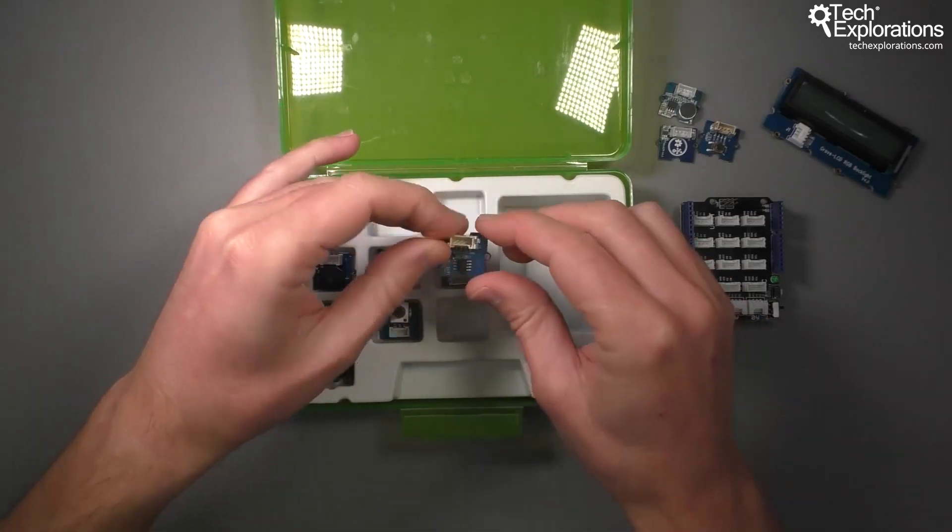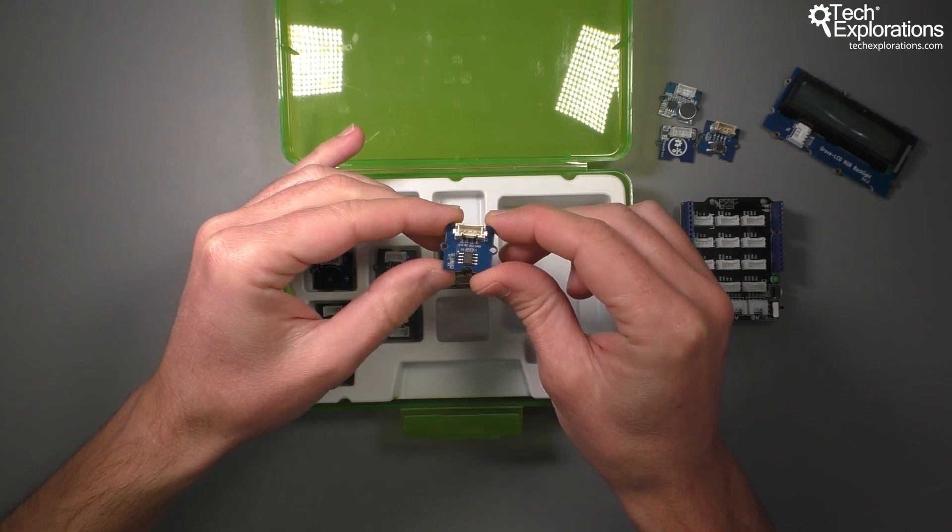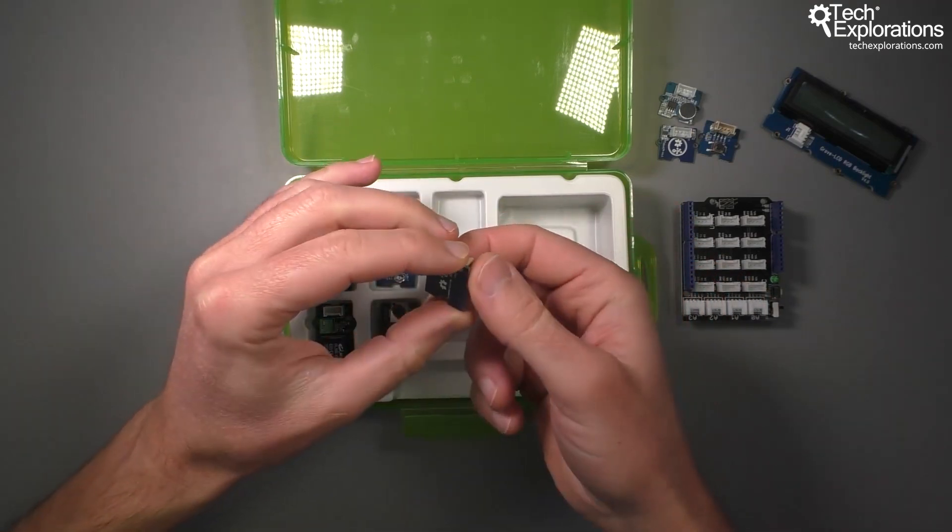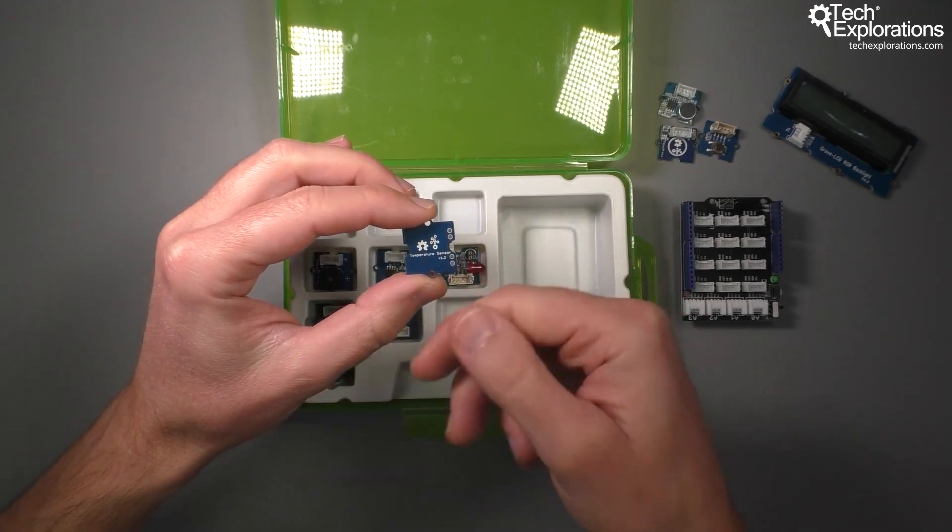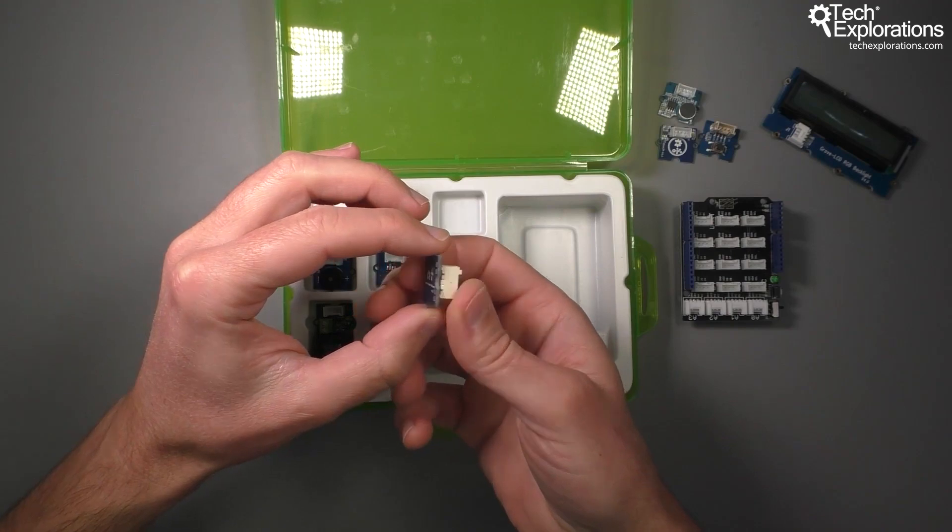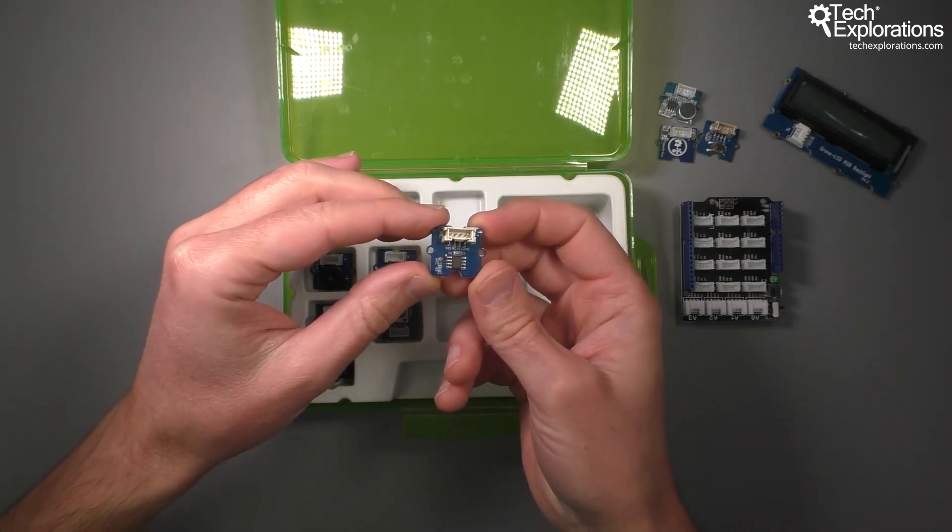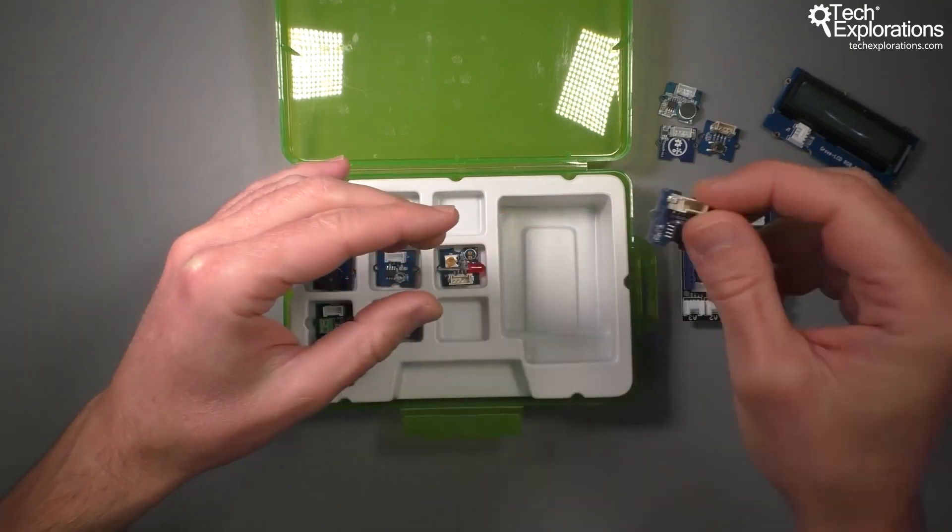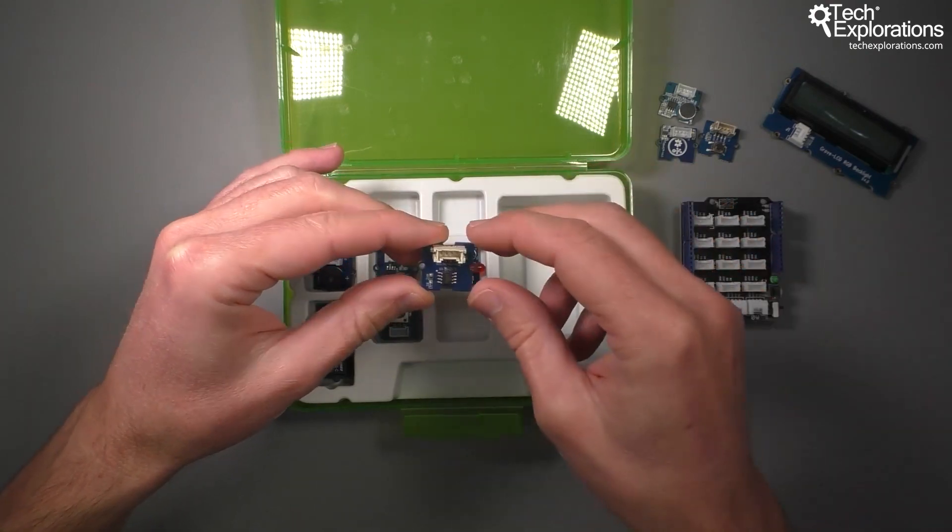This module here contains a temperature sensor. There's a few different ways by which you can build a temperature sensor. This one here is using a thermistor, which is a resistor that has a resistance that changes with the change in temperature. We'll be using this to measure and then calculate temperature. We've got an experiment later on in this course where I show you how to build your Grove system within Arduino to build an environment monitor.